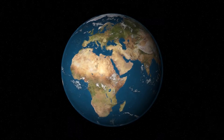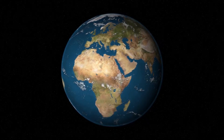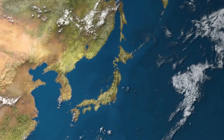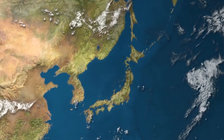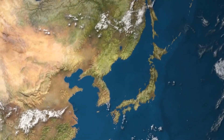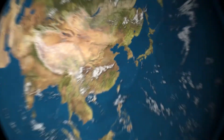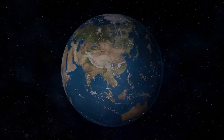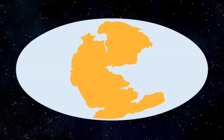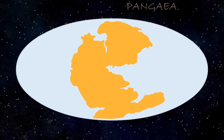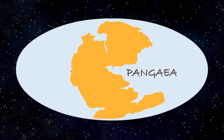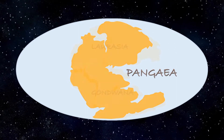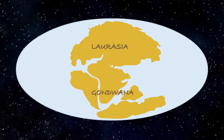To begin with, the Earth has not always looked the way it does today. About 300 million years ago, it didn't have the seven continents but instead one massive supercontinent called Pangaea. About 200 million years ago, Pangaea split into Laurasia and Gondwana.